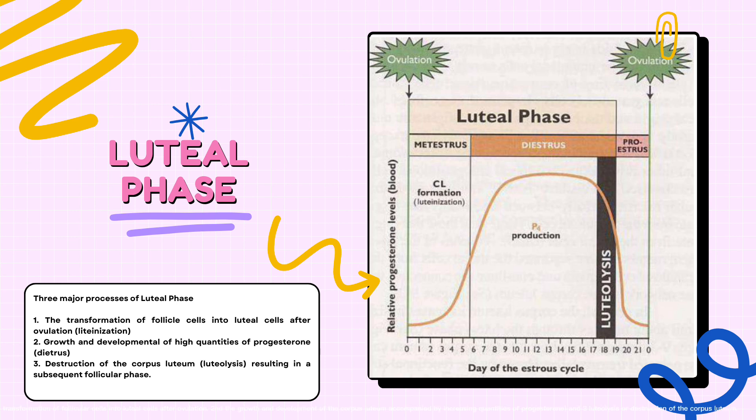First is luteinization, or the transformation of follicular cells into luteal cells after ovulation. Second, the growth and development of the corpus luteum accompanied by increasing quantities of progesterone. And third, luteolysis, or destruction of the corpus luteum.